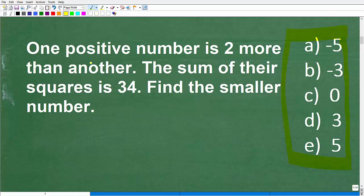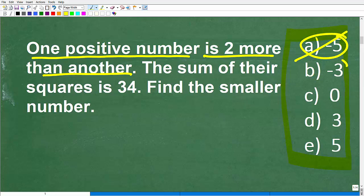So, let's go ahead and take a look at something that's very obvious here. And, hopefully, most of you picked up on this. So, it says one positive number. One positive number is two more than another. So, we're talking about positive numbers. Now, let's take a look at our answer choices here. We have negative five. Well, is that a positive number? No. So, we can eliminate that as an option. How about B? Well, that's negative three. So, we can eliminate that.